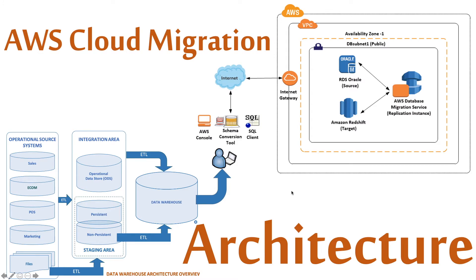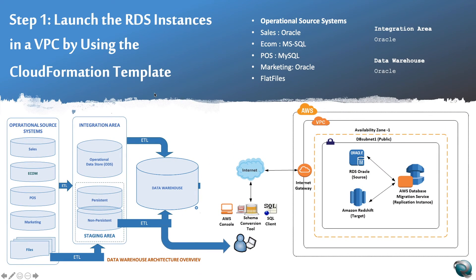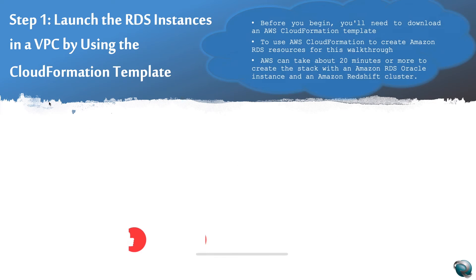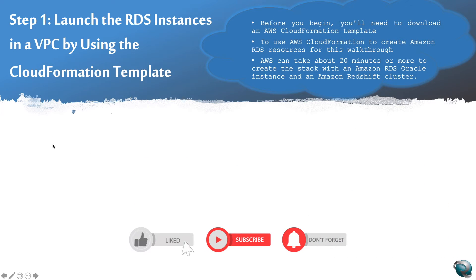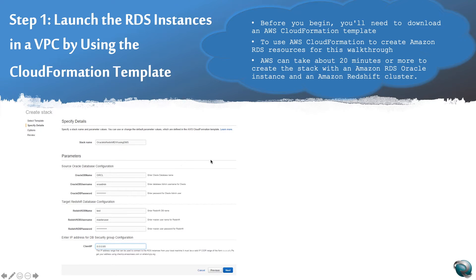Coming back to step number one: launch your RDS environment in a VPC using a CloudFormation template. You can use the AWS Data Migration Service (DMS) to migrate your data to and from most widely used commercial and open source databases such as Oracle, Microsoft SQL Server, Redshift, Aurora, MariaDB, and MySQL. It is very important that you must have this CloudFormation template.